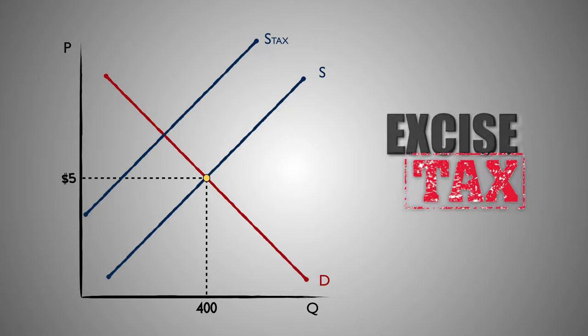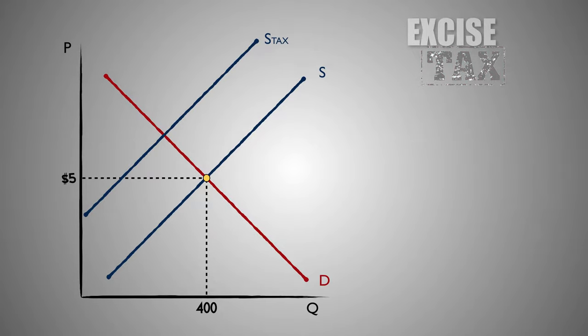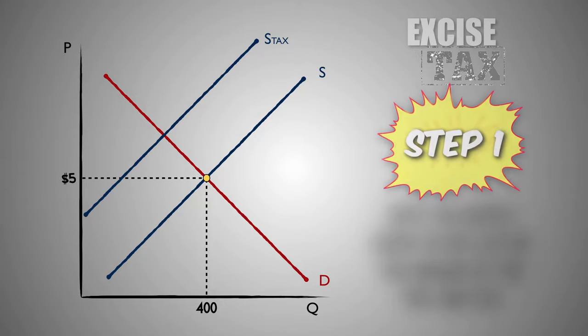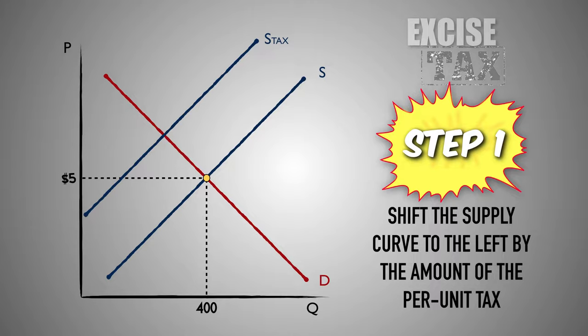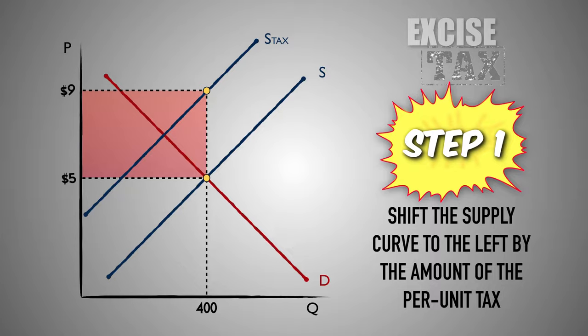In order to graph the impact of a per unit tax on the price and quantity of a good in the product market, there are exact steps to take. Step 1: To show a decrease in the supply in the market, shift the supply curve to the left in the exact amount of the per unit tax. Take the amount of the tax paid by the firm for every unit produced and shift the supply curve to the left so that the space between the supply curves at every quantity equals that amount. Here you can see that the space between the supply curves in the market for Good C equals $4, which is the size of the tax paid by firms for every unit of Good C produced.